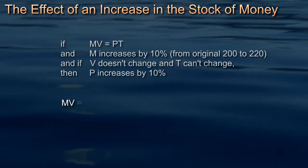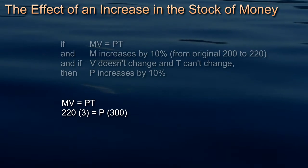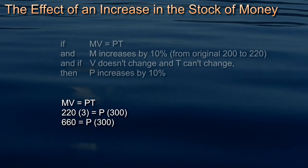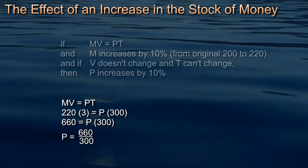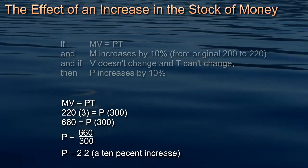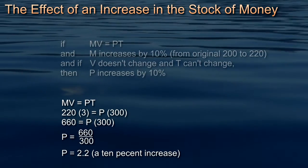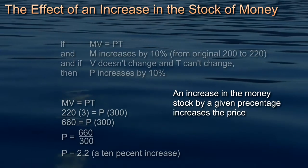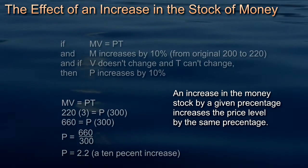Checking this out: MV equals PT — 220 times 3 equals P times 300 — where V is constant and T is constant. 660 equals P times 300. Dividing through by 300 gives P equals 660 over 300, which equals 2.2. An average price of €2.20 is a 10% increase in price following the 10% increase in the money supply. So given our assumptions about V and T — assumptions not everyone would accept — the key to controlling inflation is to control the money supply.